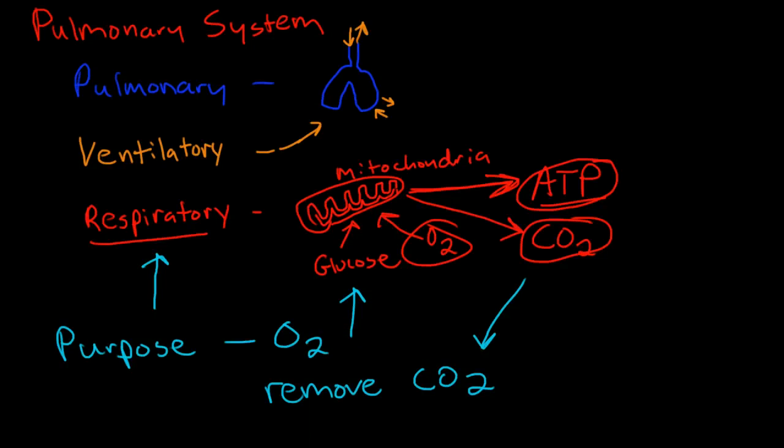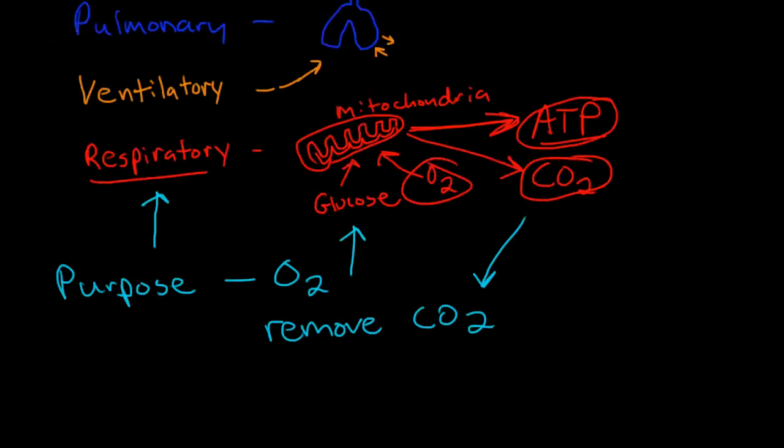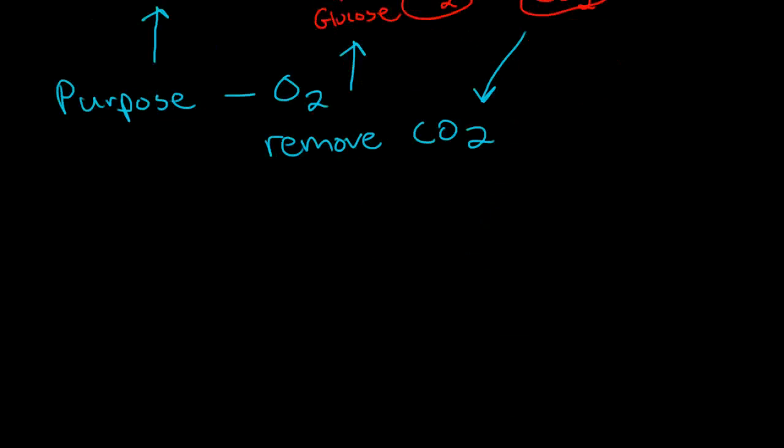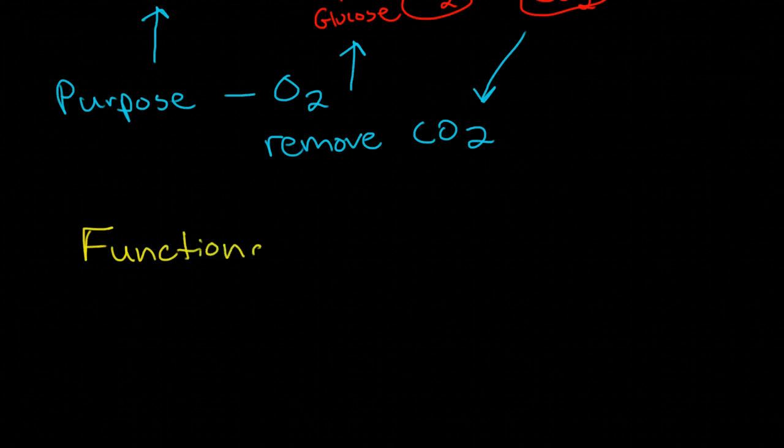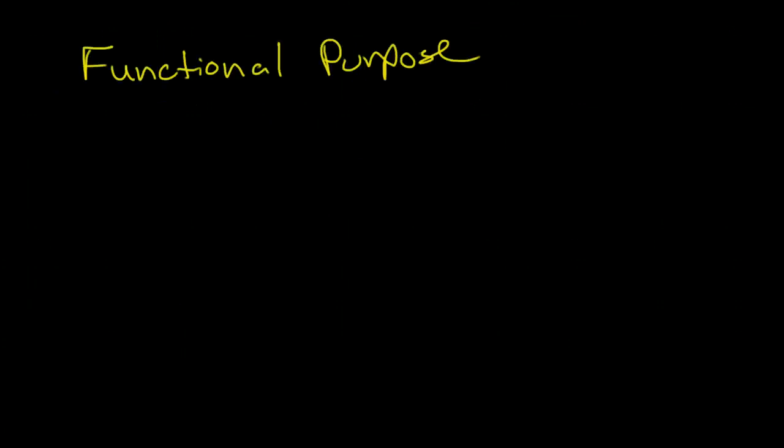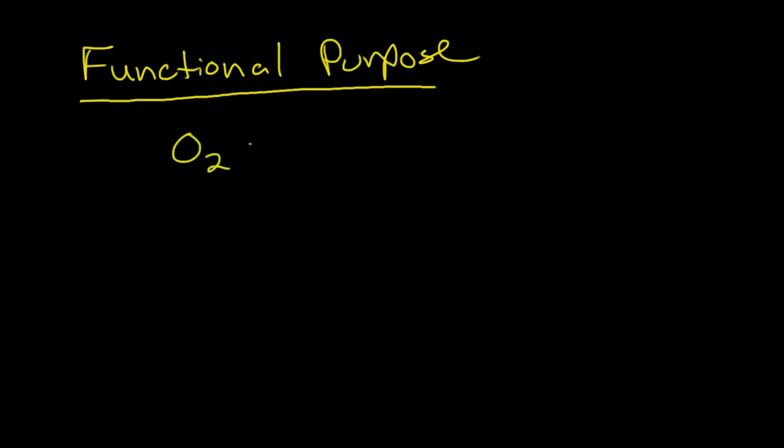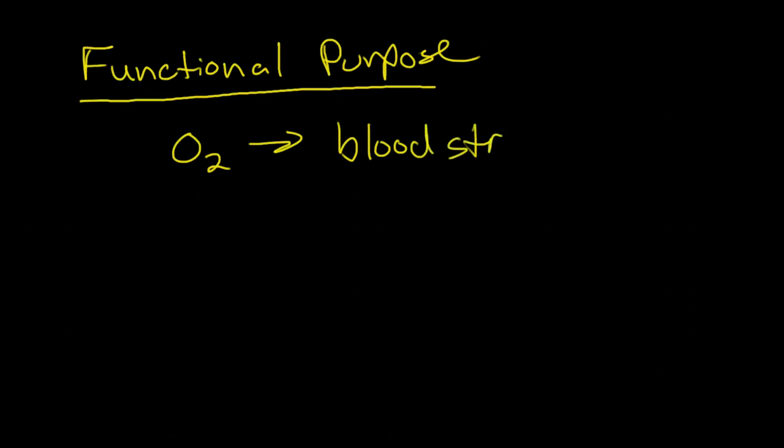How does this happen? The way the lungs are structured—I'll call this the overall purpose—and then what I would call the functional purpose of the pulmonary system. The functional purpose is essentially to provide a place for oxygen to dissolve into the bloodstream or into plasma. The lungs are set up specifically for this purpose by having a very large surface area, about 100 meters squared.